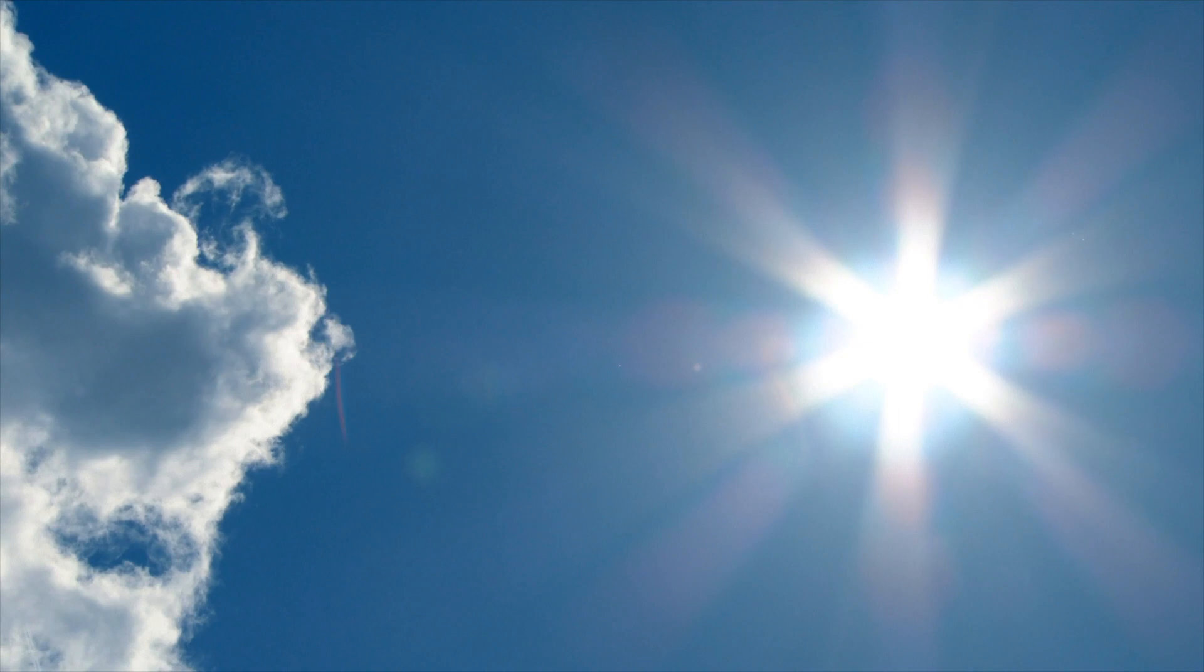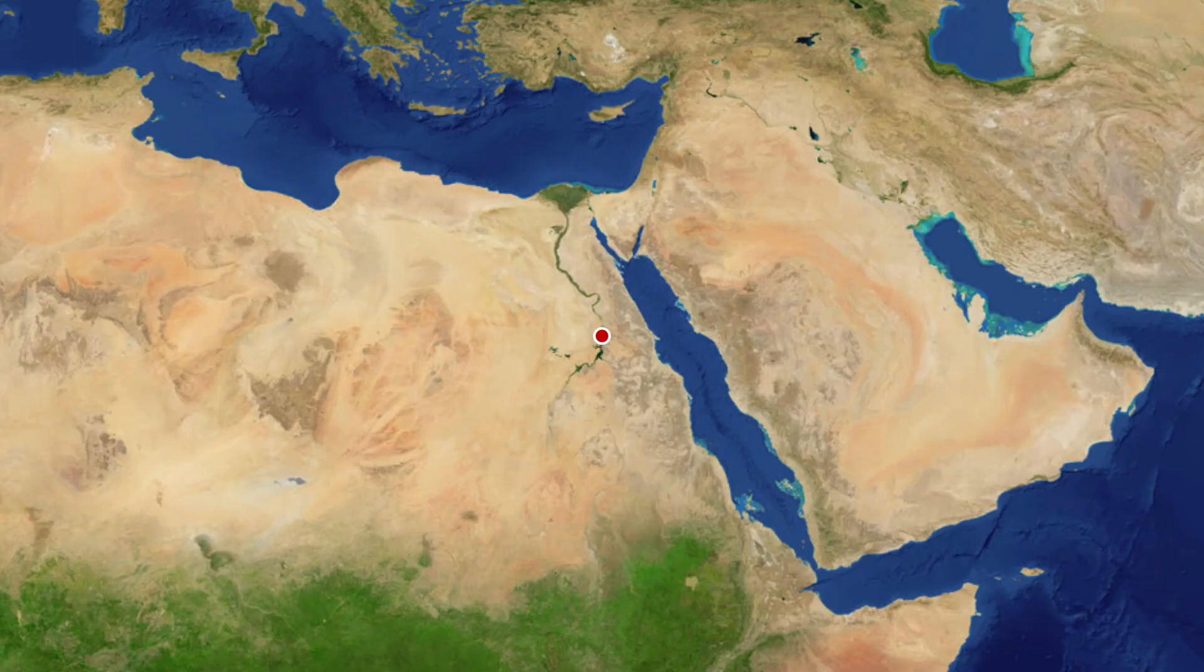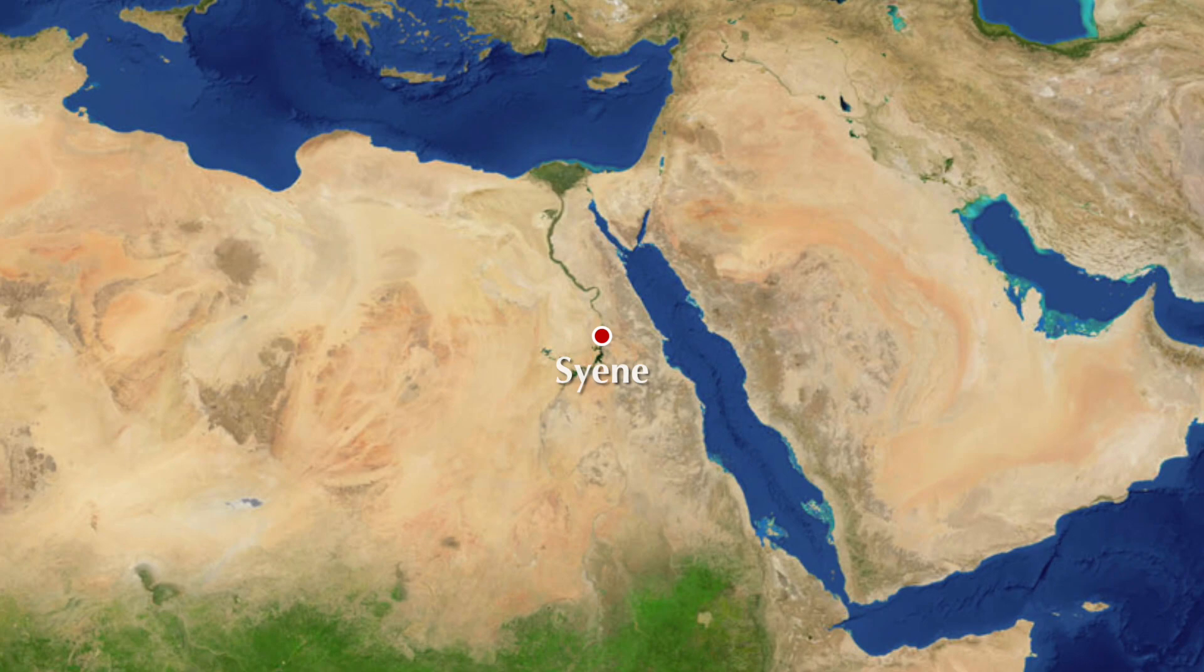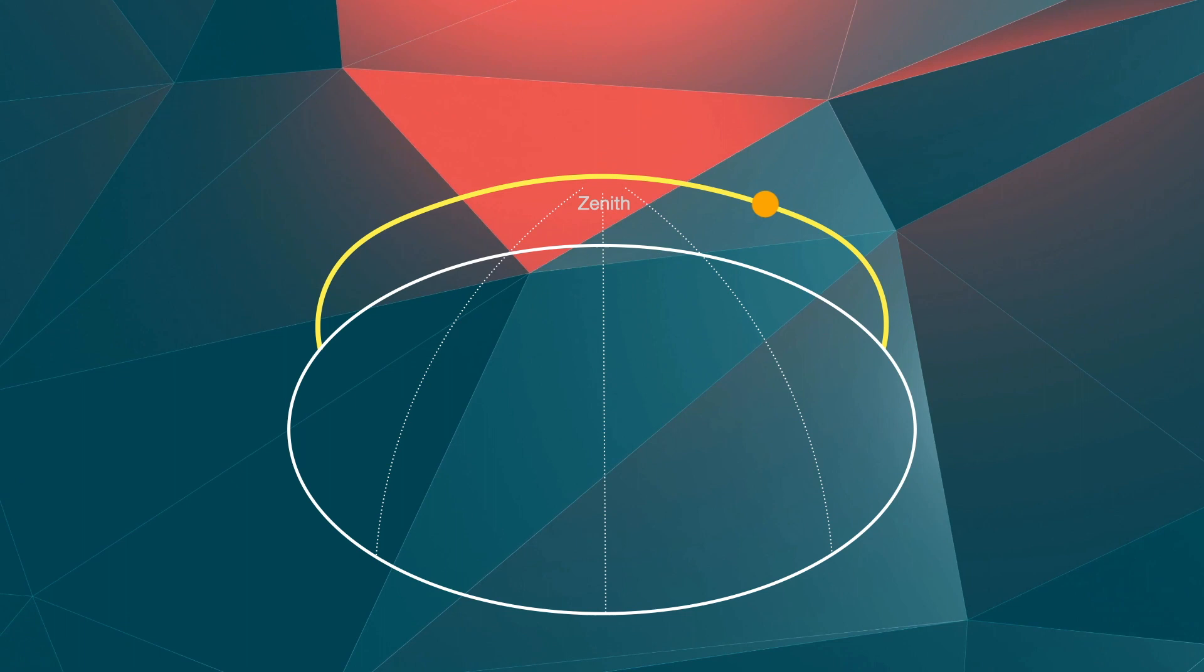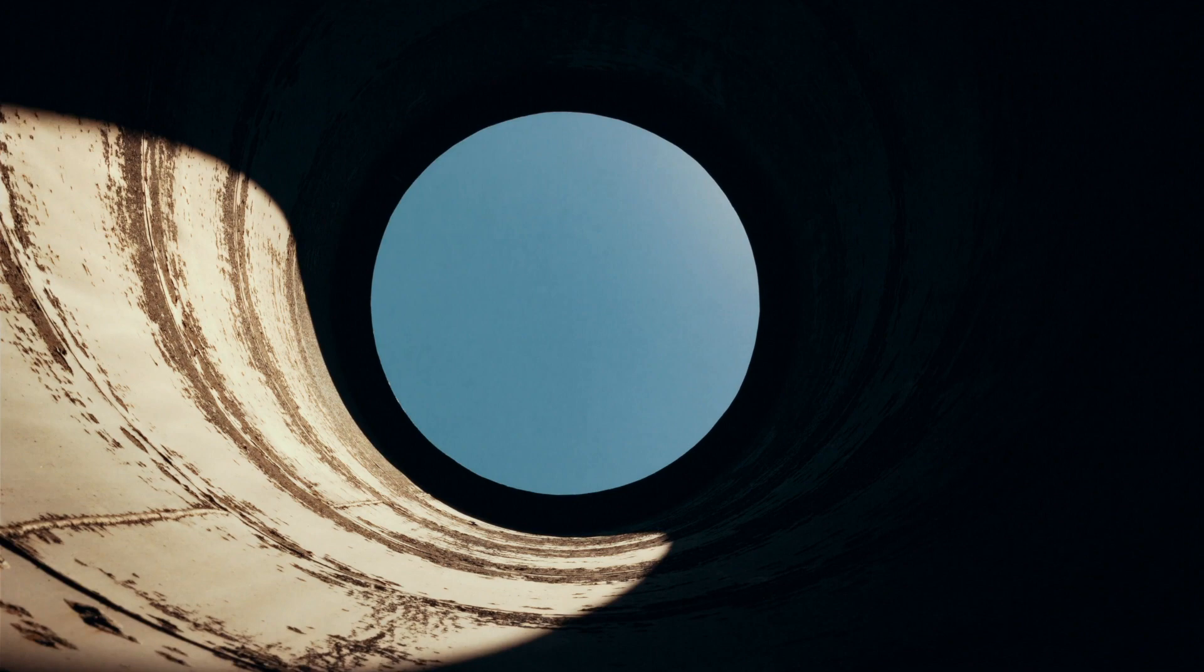Eratosthenes learned that on the summer solstice, June 21st, there was a town in southern Egypt called Syene where objects did not cast a shadow at solar noon, the time of day when the sun is at its highest point in the sky. Even the bottom of a well was illuminated by direct sunlight because the sun was directly overhead.